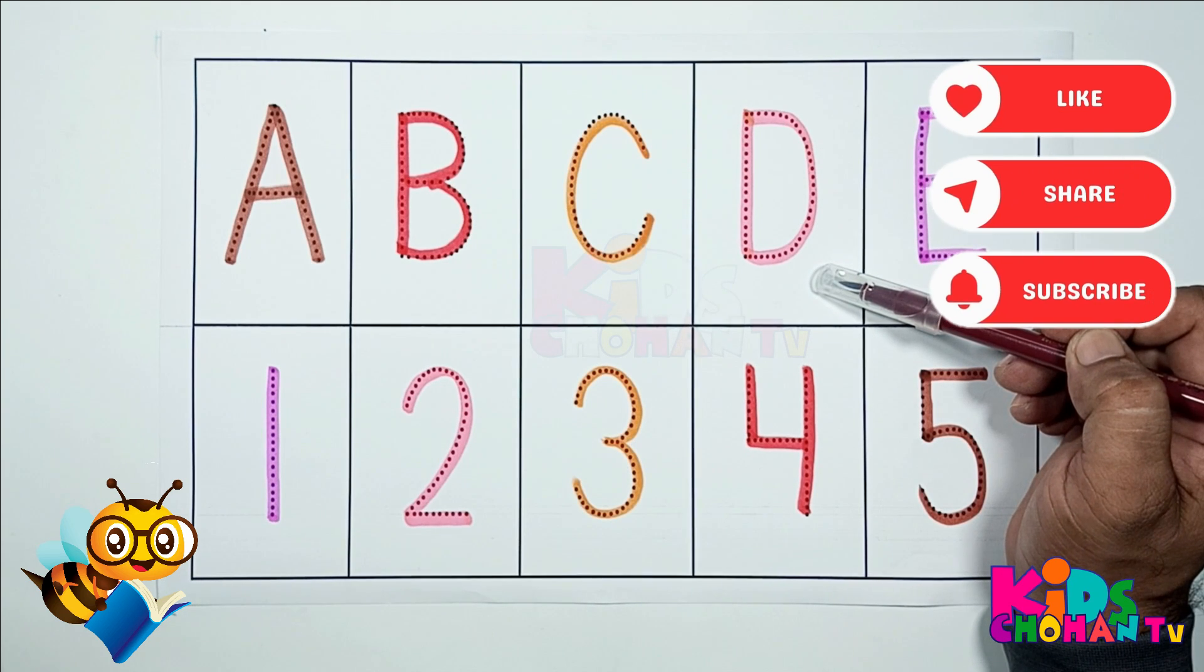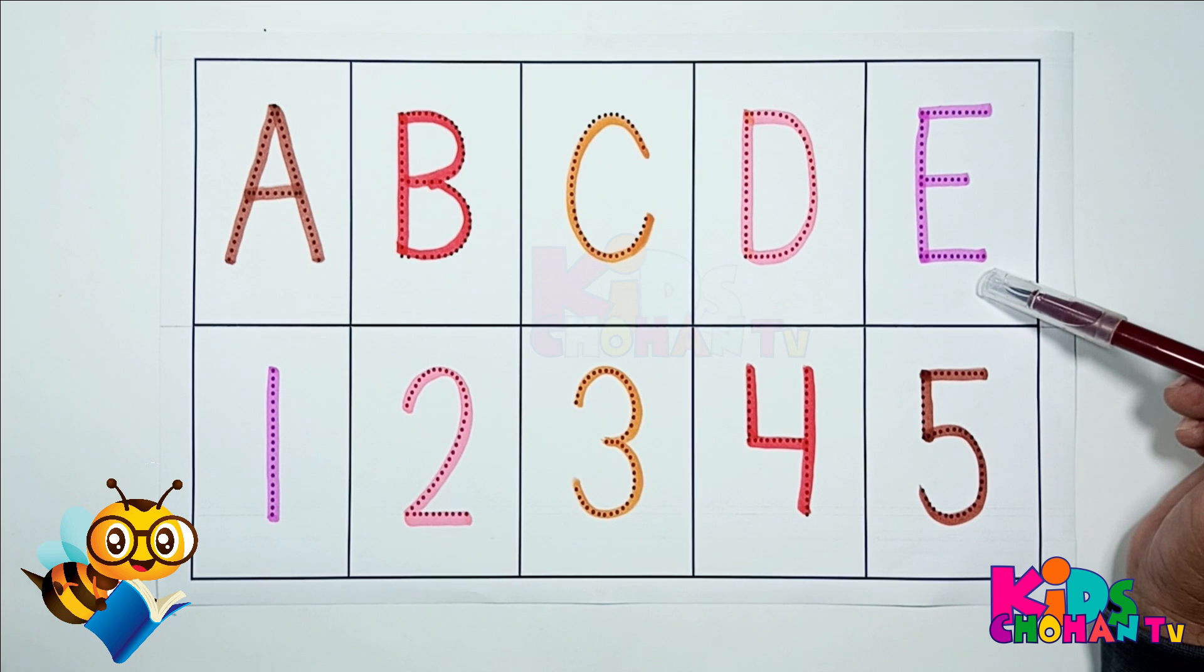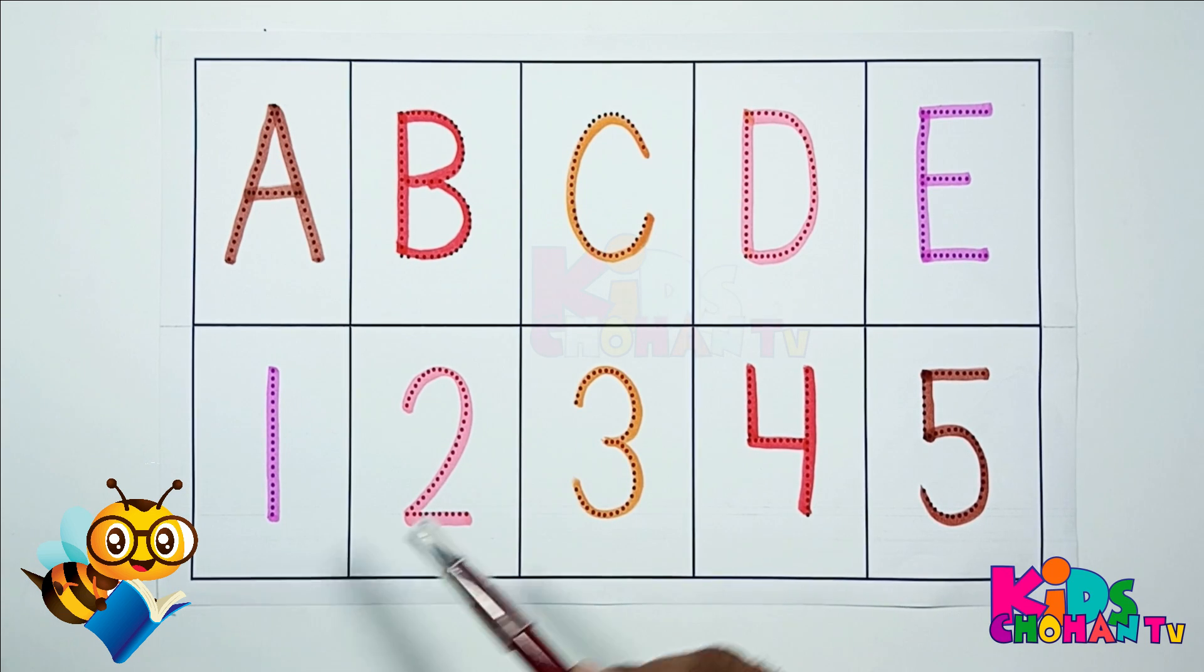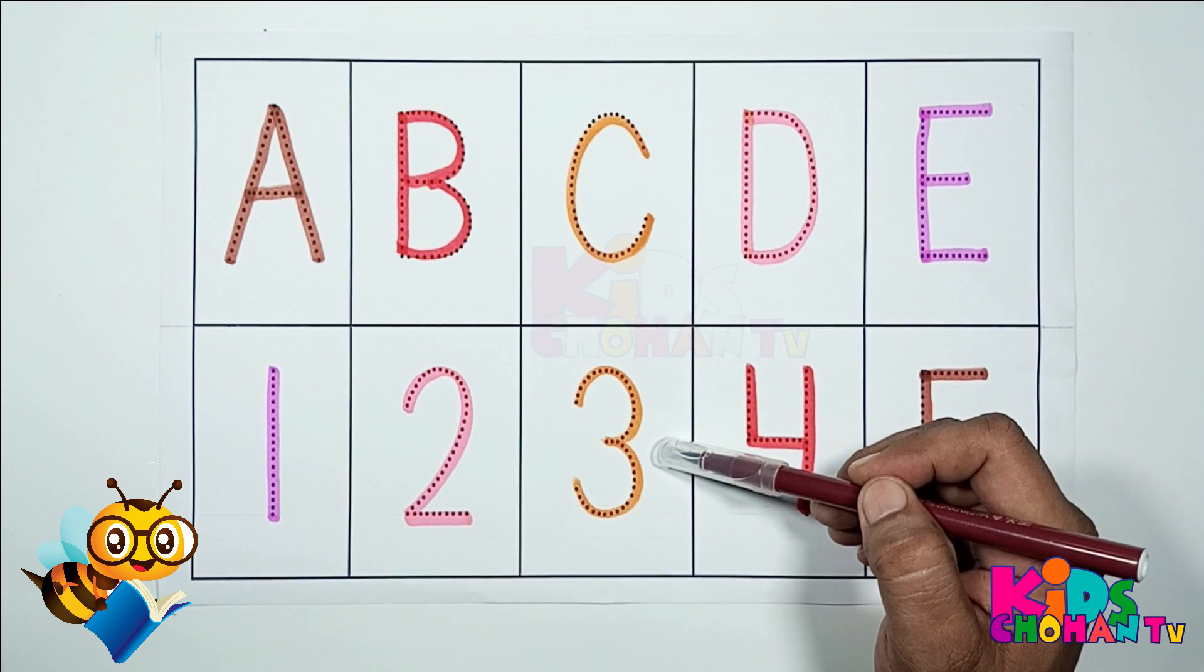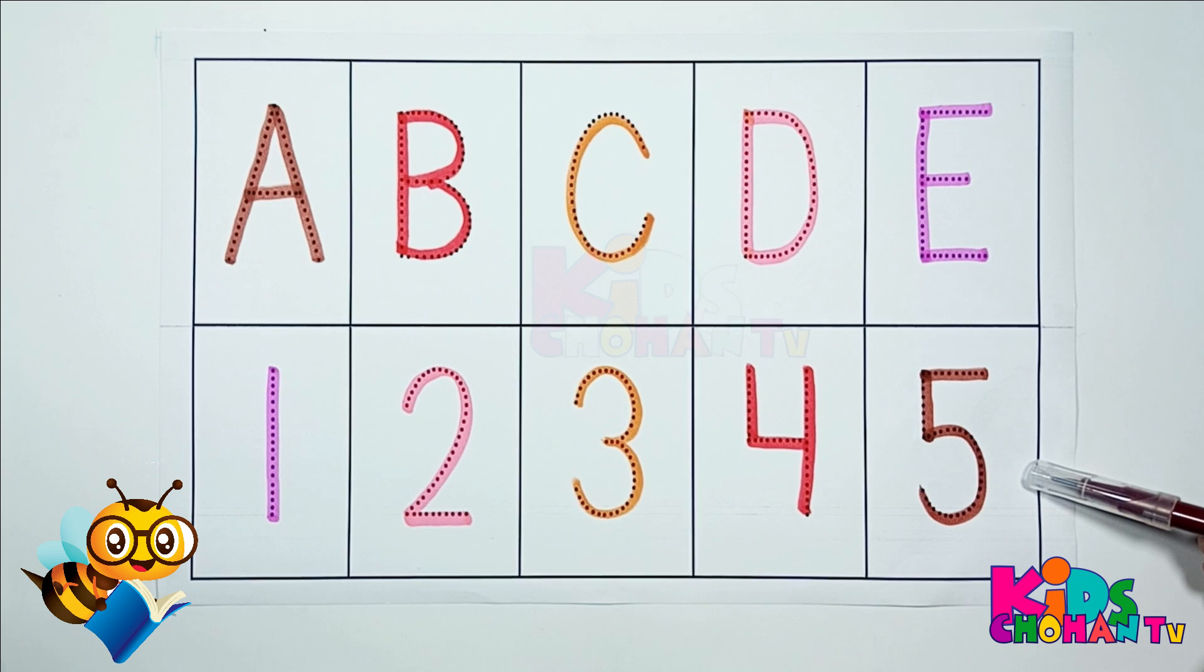One, one, O-N-E, one. Two, T-W-O, two. Three, T-H-R-E-E, three. Number four, F-O-U-R, four. Number five, F-I-V-E, five.